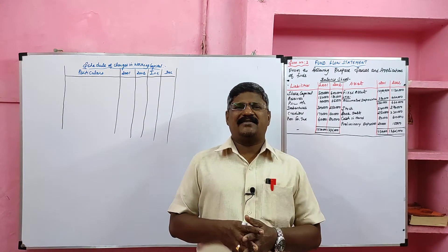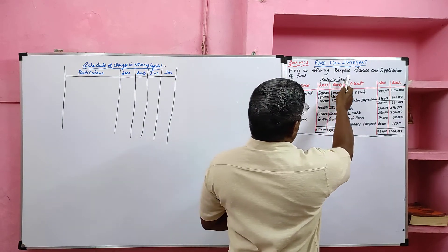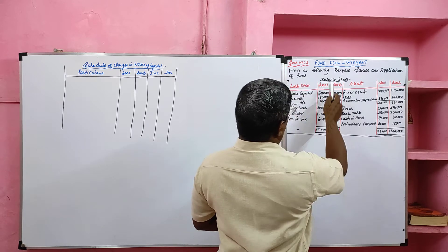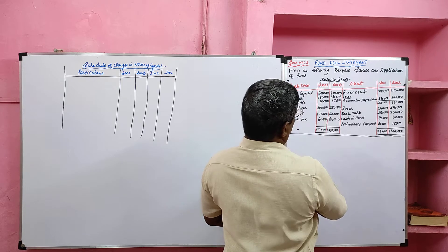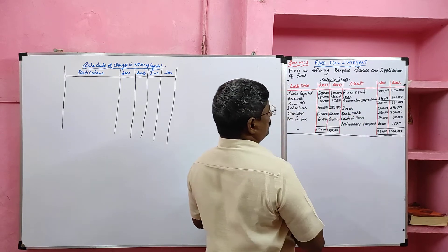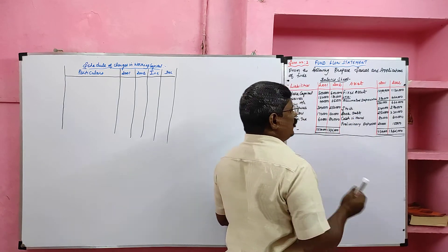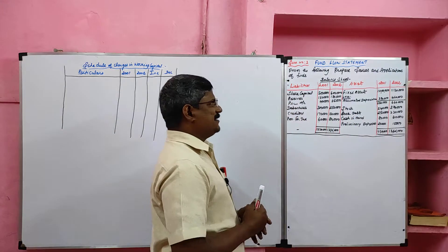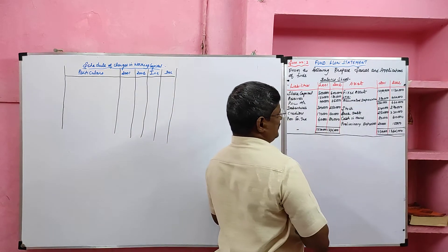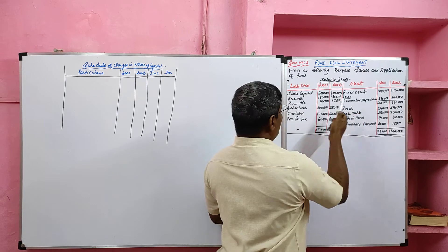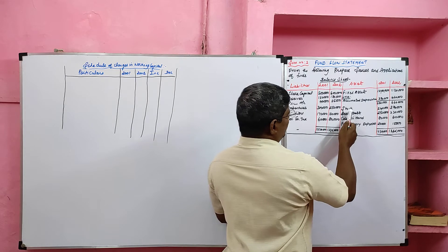Look at the problem - sum number three. From the following, prepare sources and application of fund. A balance sheet is given with liabilities and assets for 2001 and 2002. Fixed assets less accumulated depreciation are given. The accumulated depreciation is also known as provision for depreciation. Here the depreciation is deducted from the fixed asset; sometimes it may be given on the liability side, but we have to give the same treatment.